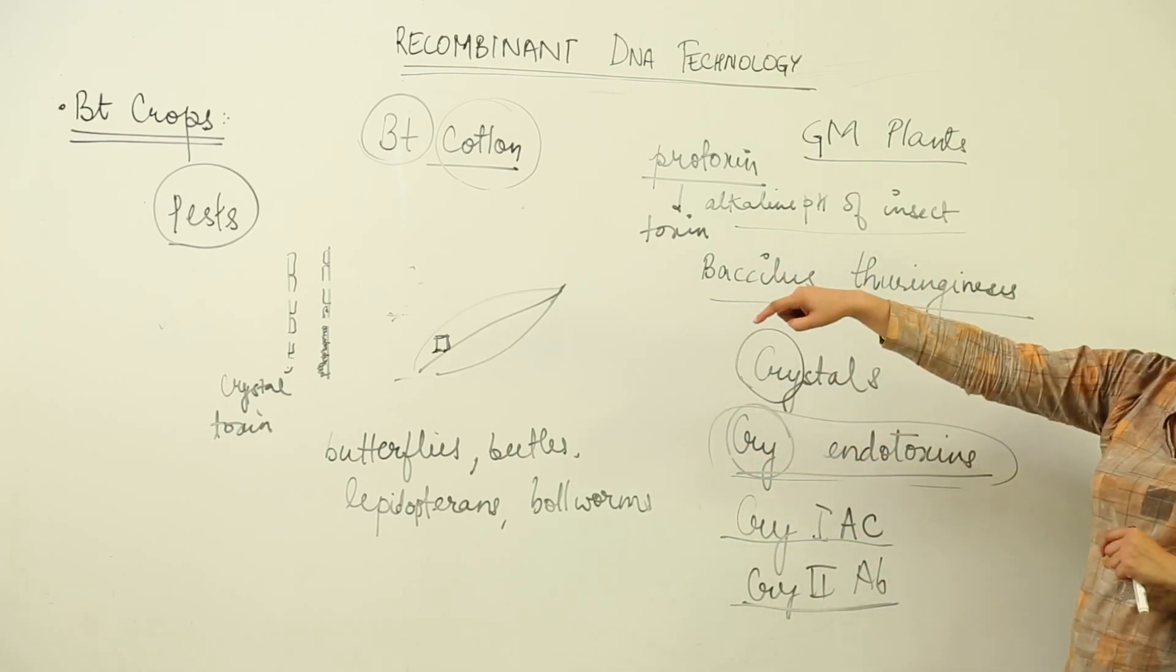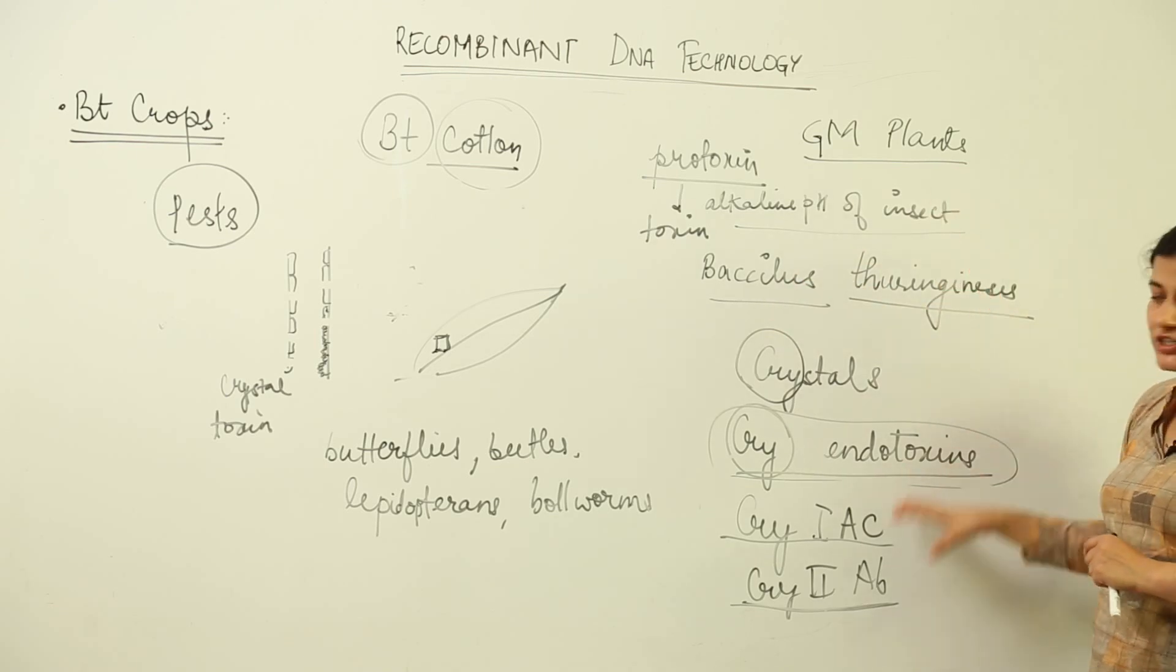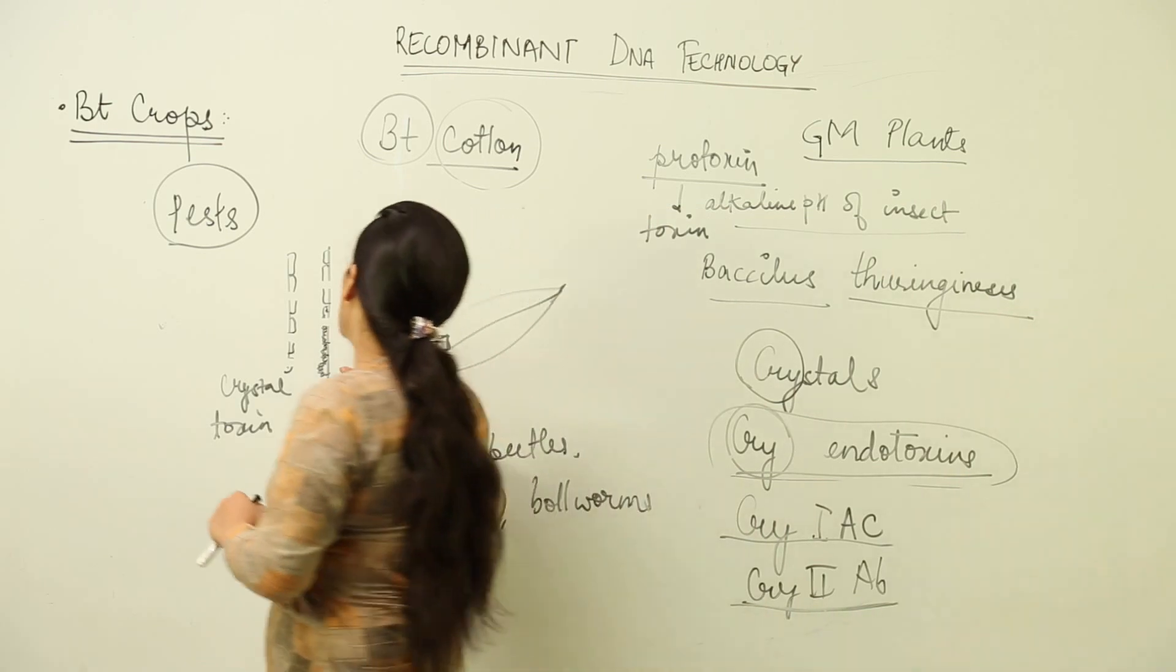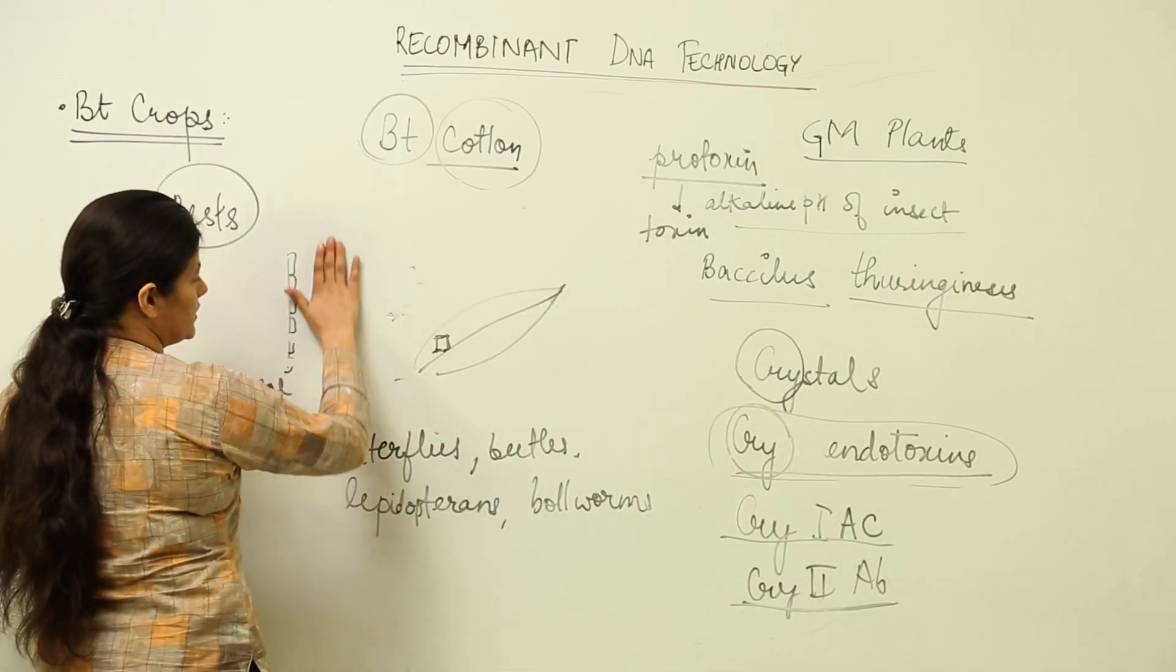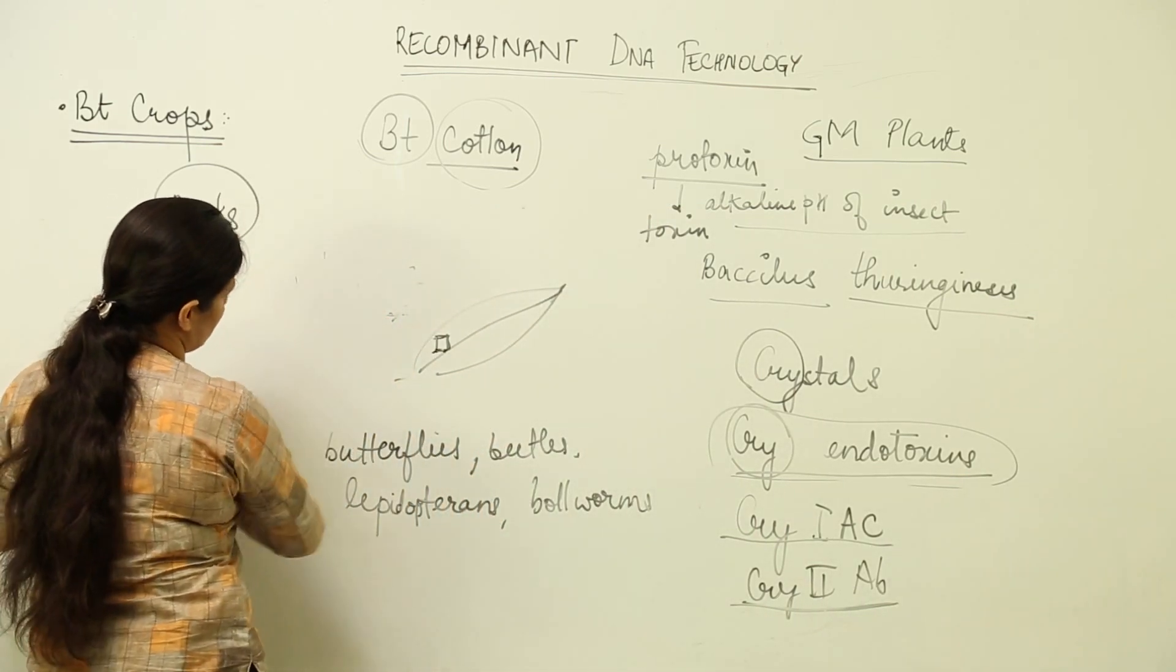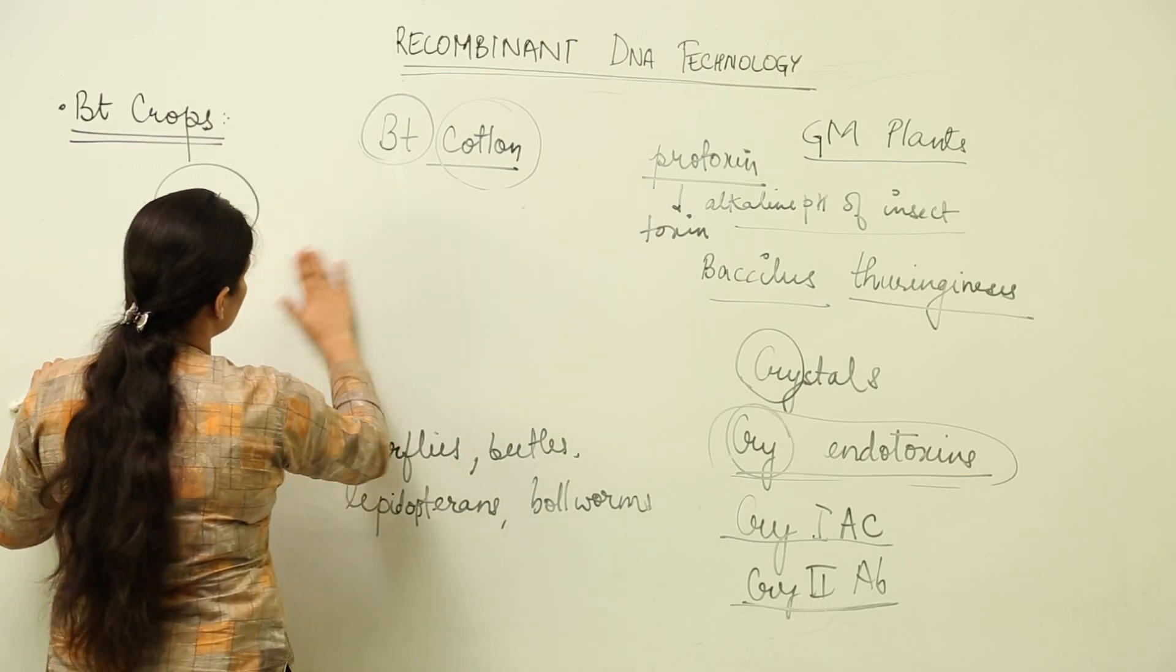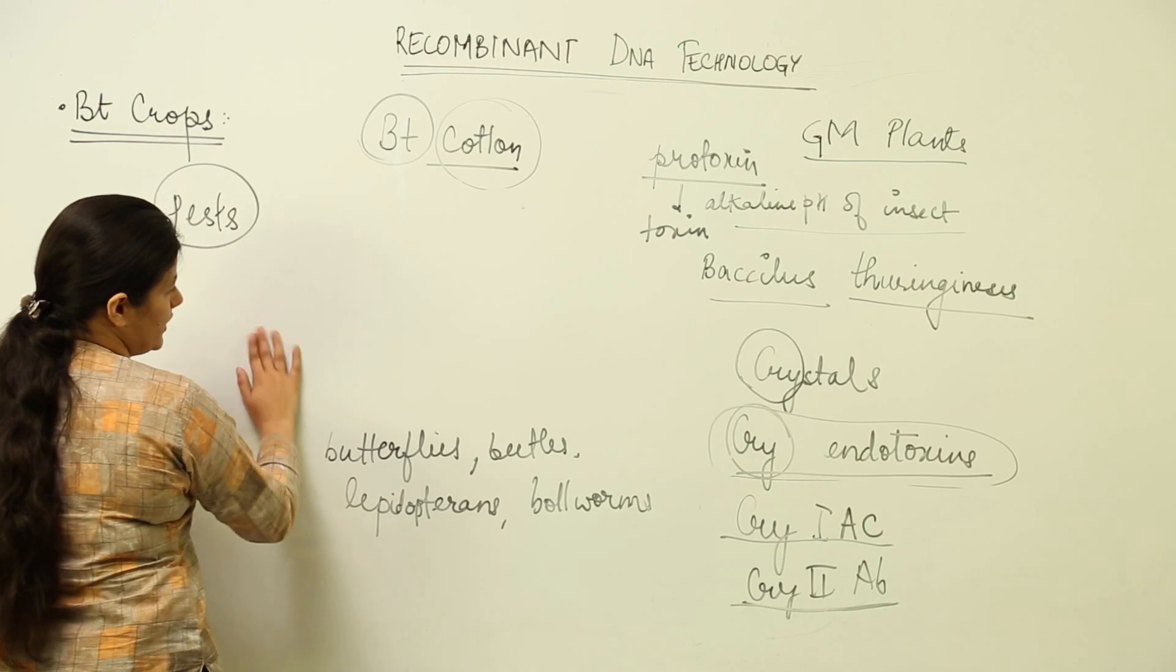This is a genetically modified crop. The cry gene has to be incorporated into the cotton plant's genome, and then it produces the toxins inside the gut of the pests which come and infest the plant.